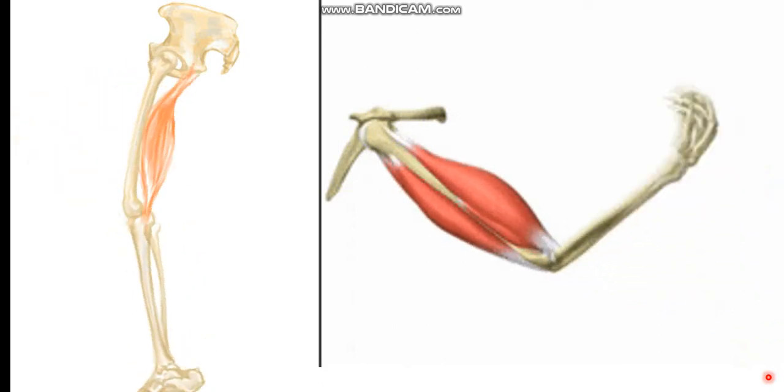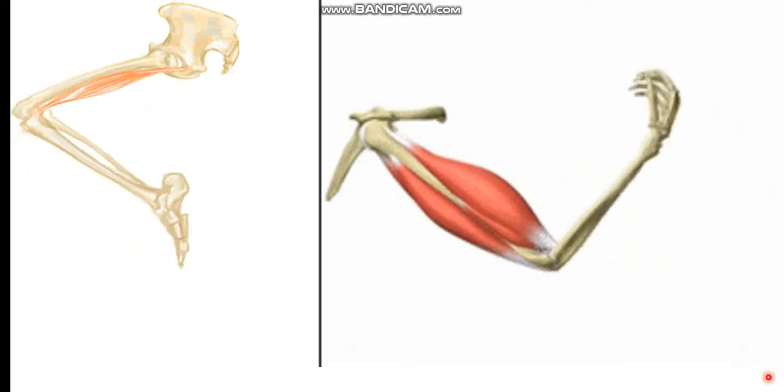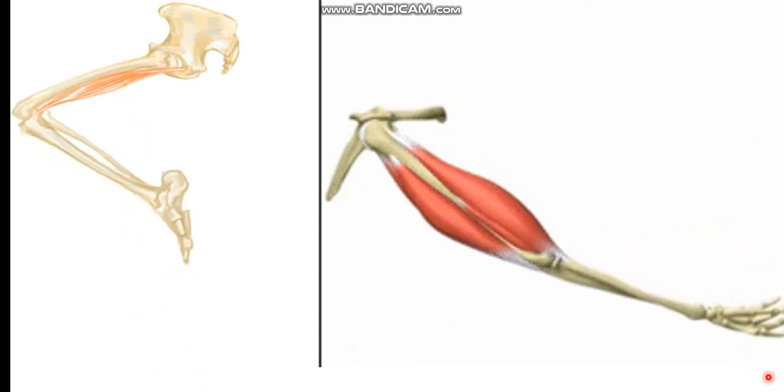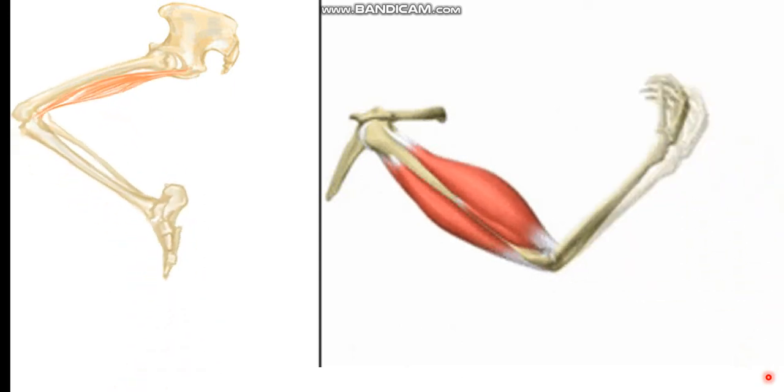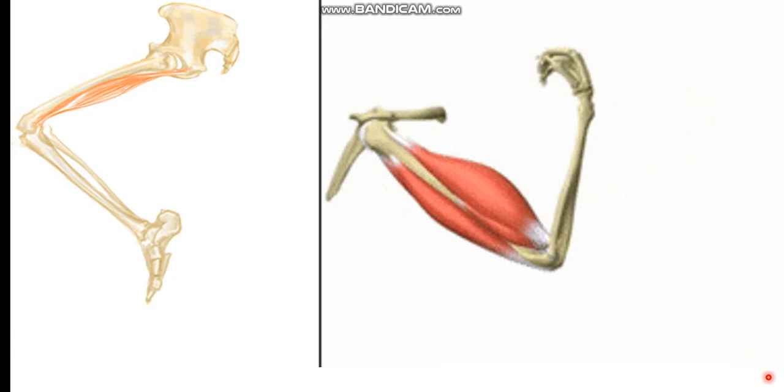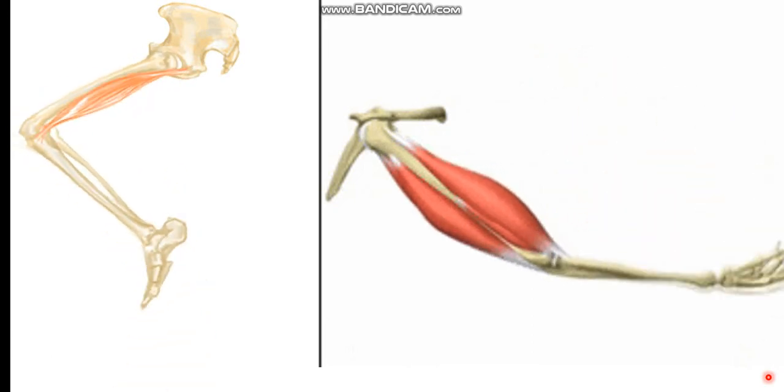Arms and legs move by the actions of muscles which work in an opposite manner. One muscle contracts while the other muscle relaxes and extends.